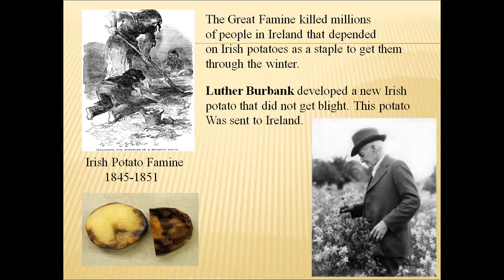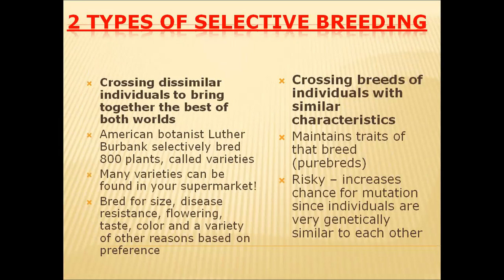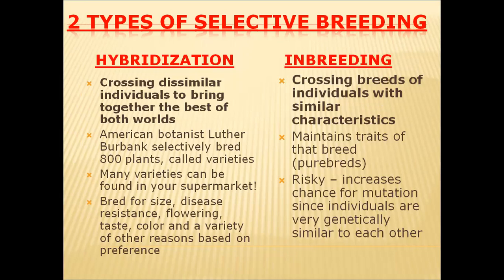There are two types of selective breeding methods: hybridization and inbreeding. In hybridization, two different individuals — plants or animals belonging to two different species — are bred together. Hybridization usually gives the best results, and the hybrids consist of the good qualities of both parents. Luther Burbank developed 800 plant varieties through hybridization experiments.